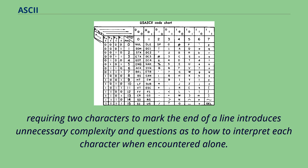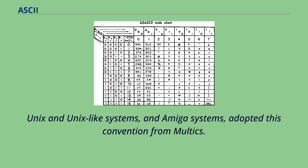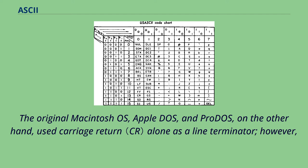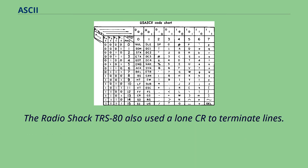Requiring two characters to mark the end of a line introduces unnecessary complexity and questions as to how to interpret each character when encountered alone. To simplify matters, plain text data streams including files on Multics used line feed alone as a line terminator. Unix and Unix-like systems and Amiga systems adopted this convention from Multics. The original Macintosh OS, Apple DOS, and ProDOS, on the other hand, used carriage return alone as a line terminator. However, since Apple replaced these operating systems with the Unix-based Mac OS, they now use line feed as well. The RadioShack TRS-80 also used CR alone to terminate lines.